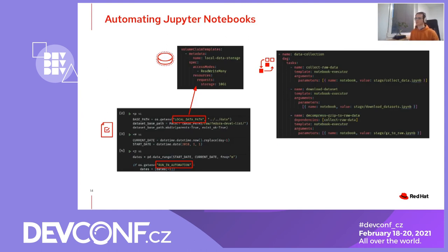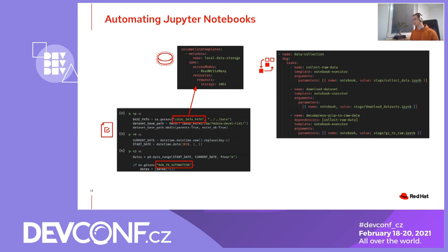Each step in Argo Workflows is an abstraction on top of a Kubernetes pod, so it allows us to define volume claims and mount them to individual steps as shared storage and common exchange points. On the right, you can see how we define our steps within the Argo Workflow. You're looking at the data collection section of our workflow, and we have three tasks shown here. Each is executing a different notebook, which is passed as a parameter to the notebook executor template. We can also define dependencies of a particular task, as shown on the third task.